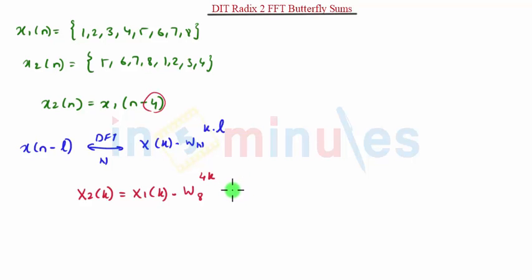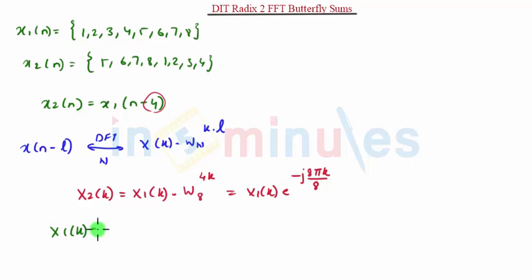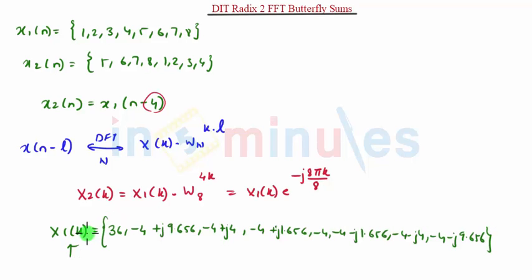Expressing W8 raised to 4k: that equals X1(k) · e raised to minus j·(8π·k / 8), which simplifies to X1(k) · e raised to minus j·π·k. We have already found X1(k), and using those values, we will calculate X2(k) using the equation X2(k) = X1(k) · e raised to minus j·π·k.